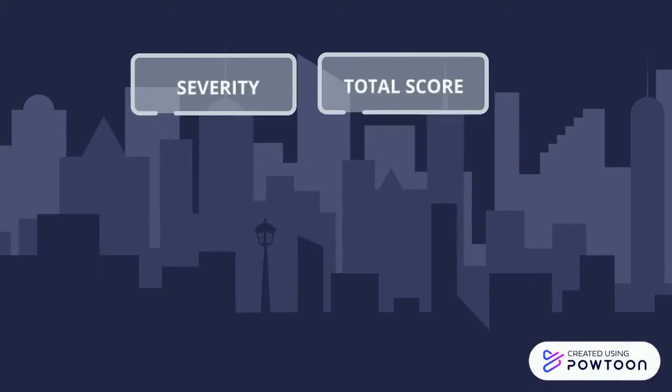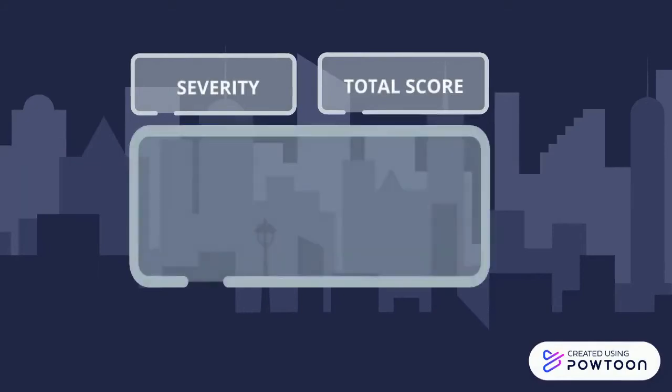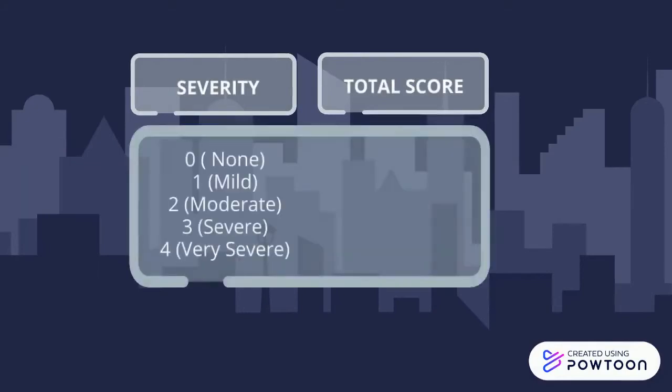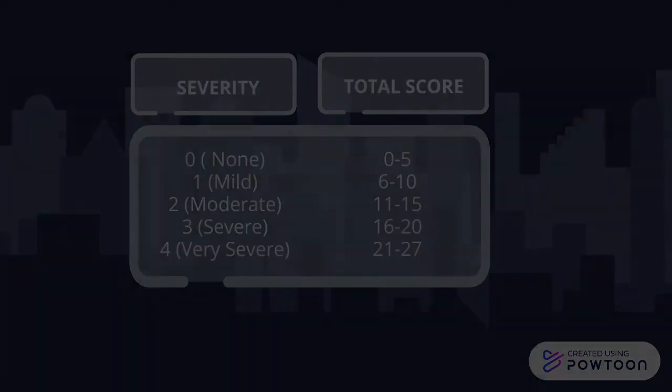For scoring interpretation: a score of 0 to 5 shows no severity; 6 to 10 shows mild severity; 11 to 15 shows moderate severity; 16 to 20 shows severe severity; and 21 to 27 shows very severe severity.